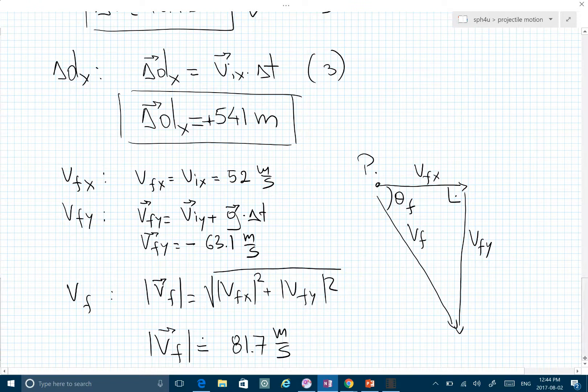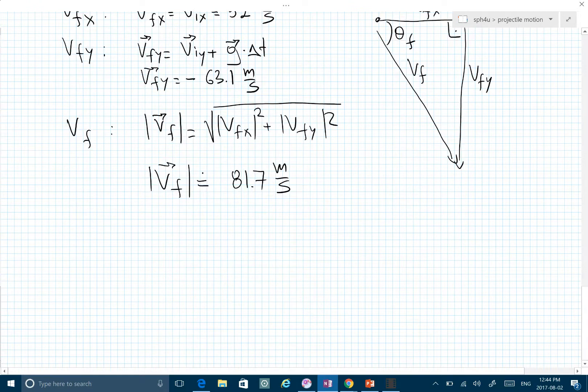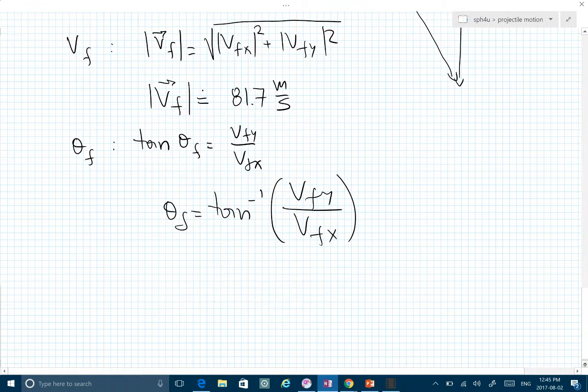Let's go to our calculations. We found VF, and now we're going to find theta F, the final angle. We use our knowledge of vector components: tan theta F is the Y component over the X component, so theta F is the inverse tan of that ratio. If you use the signs as well, we get...